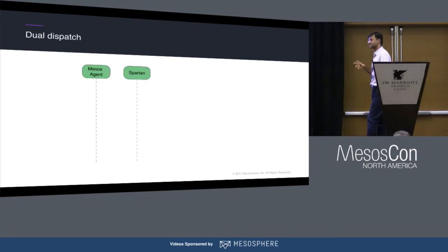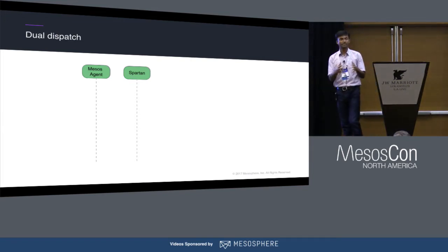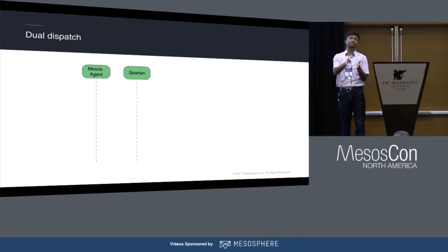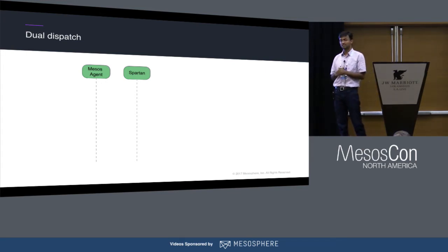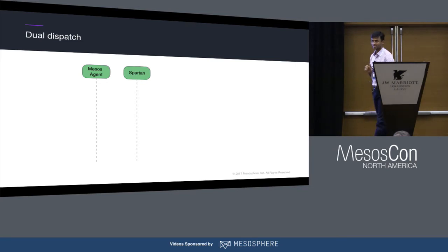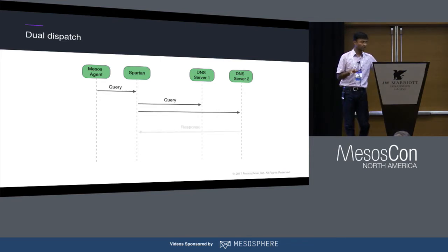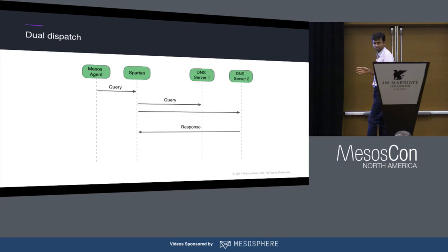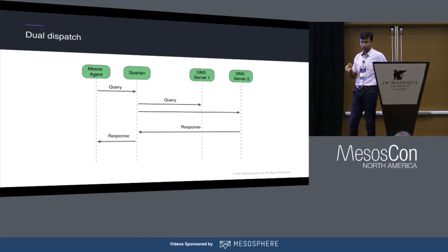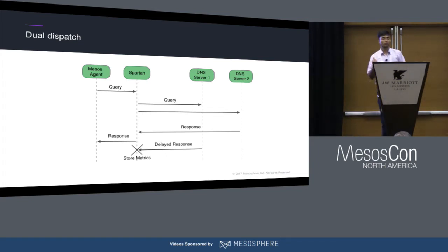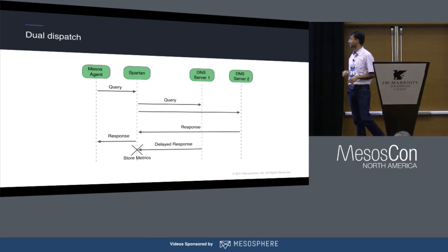Dual dispatch is an optimization in Spartan. Normally in DNS, the system picks one upstream, sends the query, waits for it to fail or timeout, then tries another — adding latency. What Spartan does instead is pick two upstreams and simultaneously dispatch the query to both. Whichever upstream responds first, that response is sent back to the querying task. The slower response is noted as a metric for that upstream, so future upstream selection will deprioritize it.